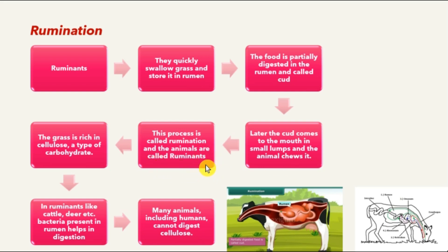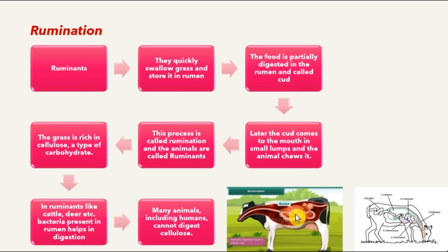This process is called rumination and the animals are called ruminants. To summarize: they quickly swallow grass, store it in the rumen where it is partially digested and called cud, and this later comes back into their mouth for chewing.